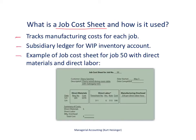Here is an example of a job cost sheet for job 50 — the one we've been focusing on. It shows three product costs: direct materials, direct labor, and manufacturing overhead. The description is a cherry wood dining room table with mahogany trim. Direct materials of $370 were put into process on May 3rd, and direct labor of $90 was recorded from May 4th. So far the total cost for this job is $460. Manufacturing overhead will be discussed in a separate video. This is the starting point for tracking costs associated with each table using a job cost sheet.